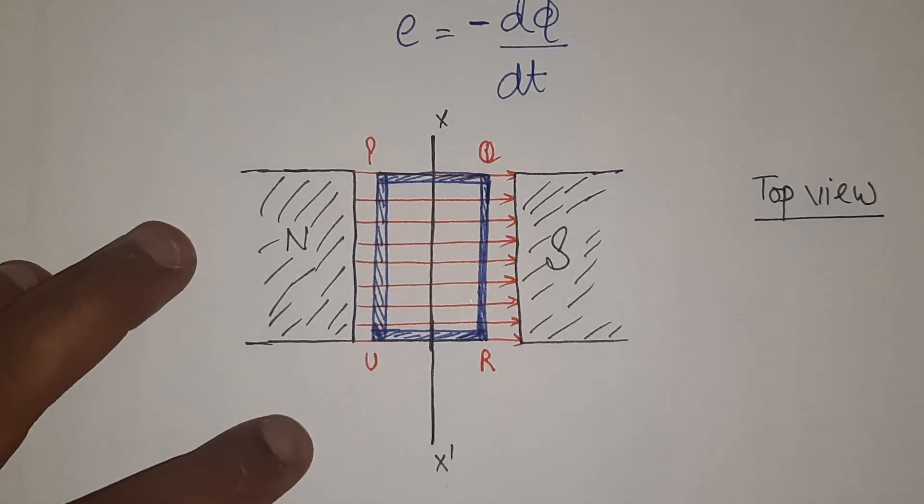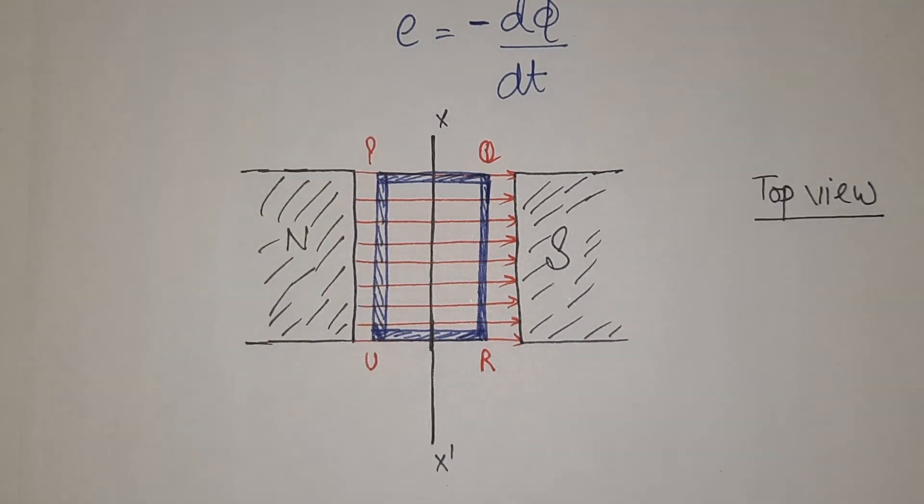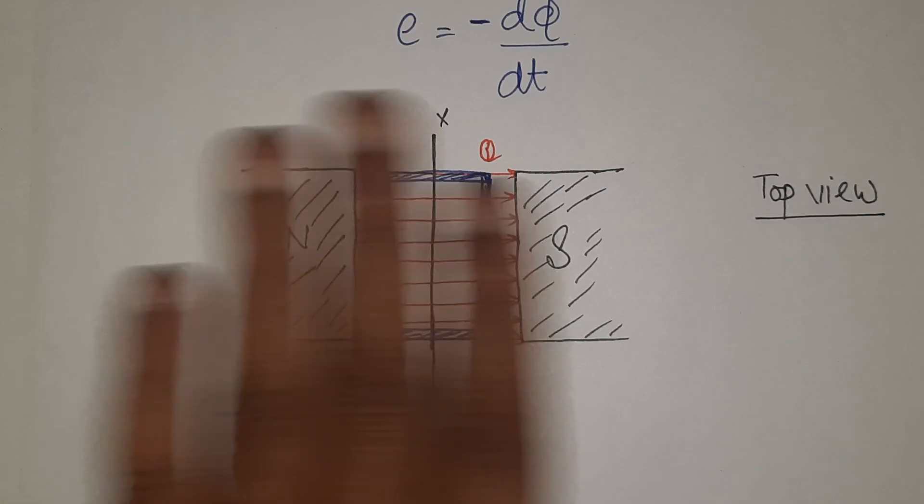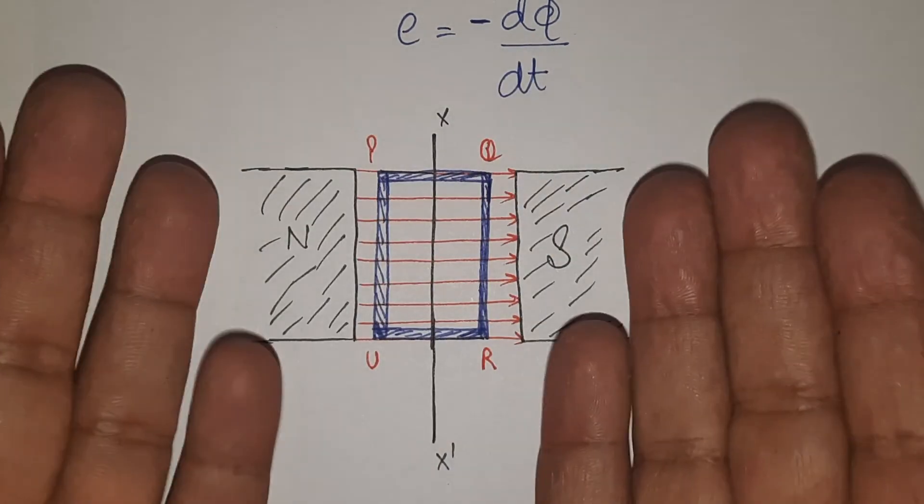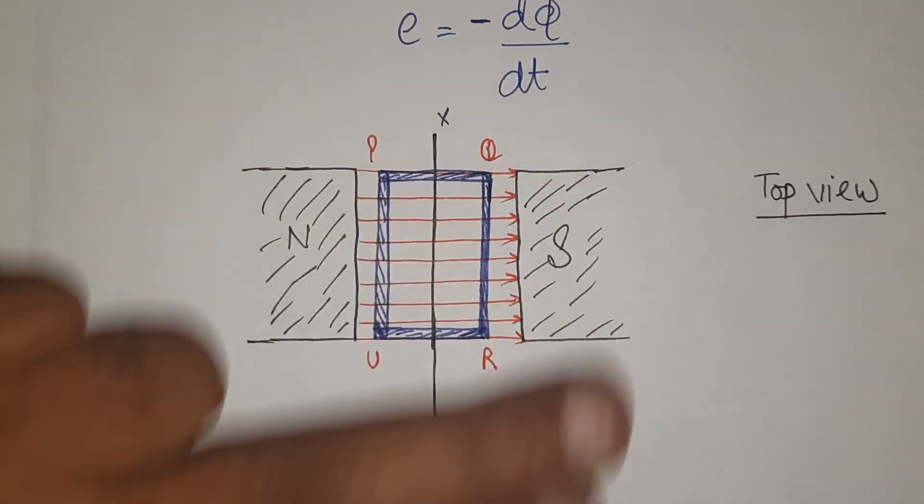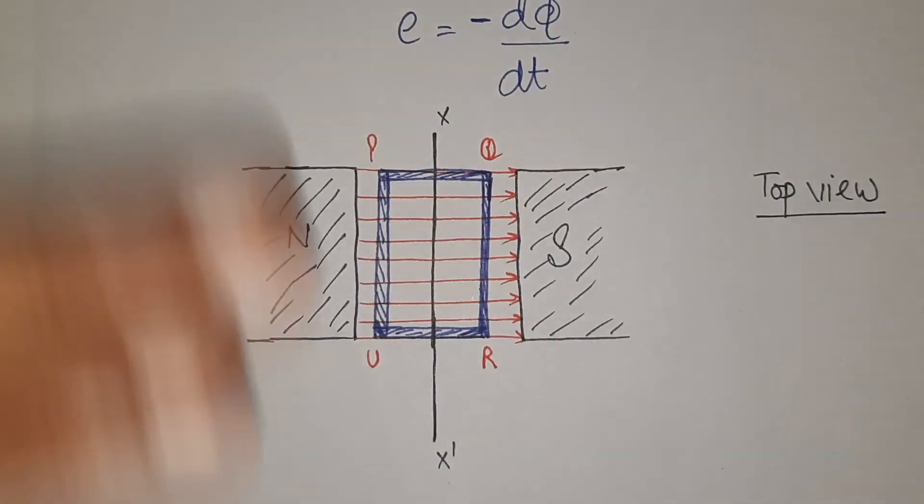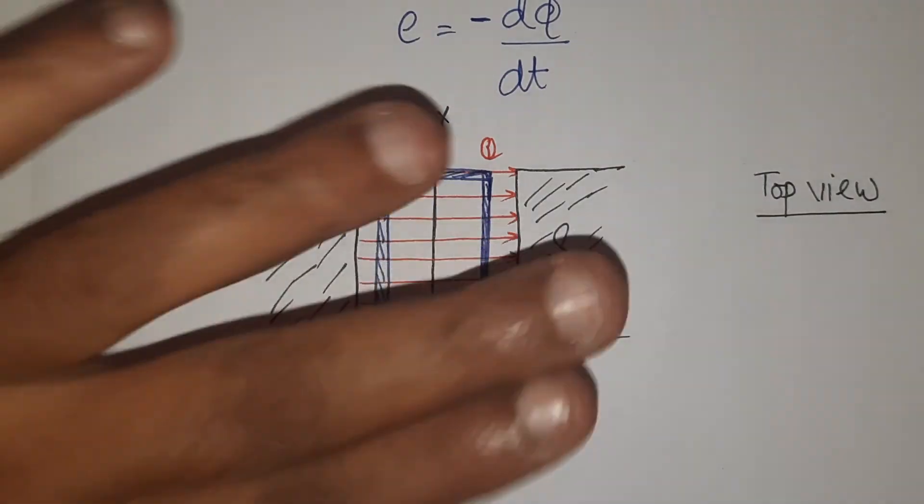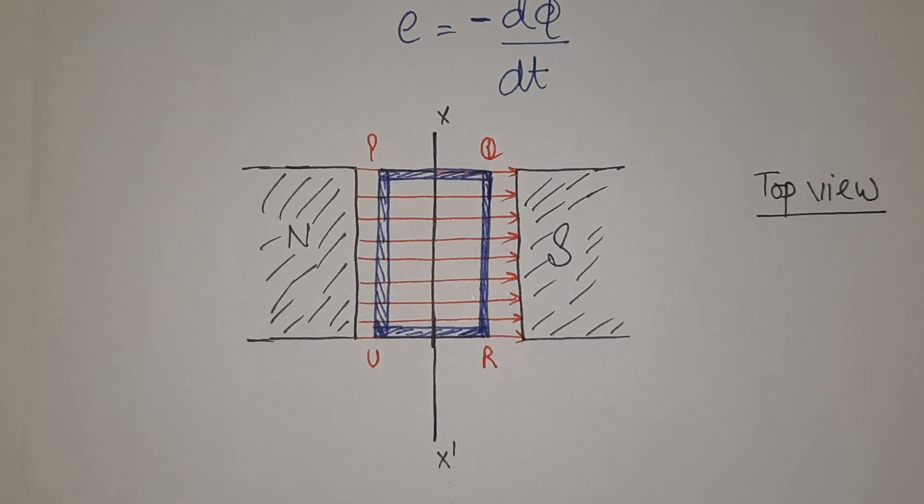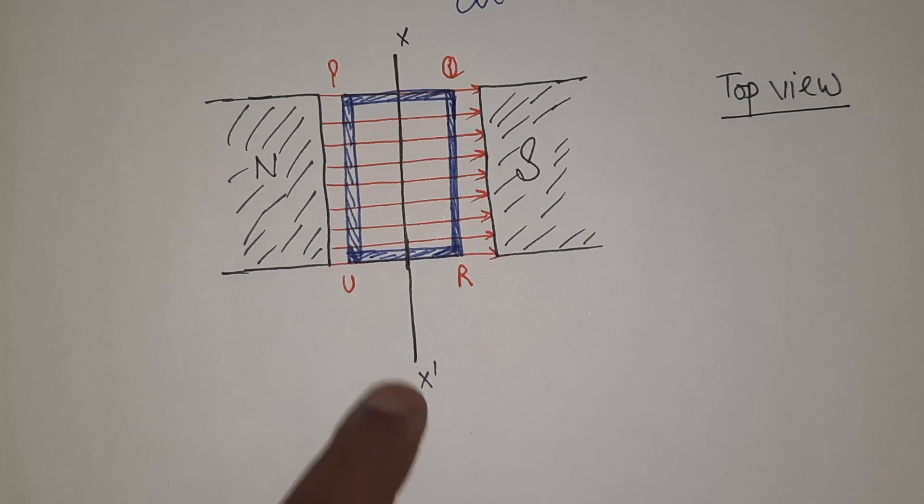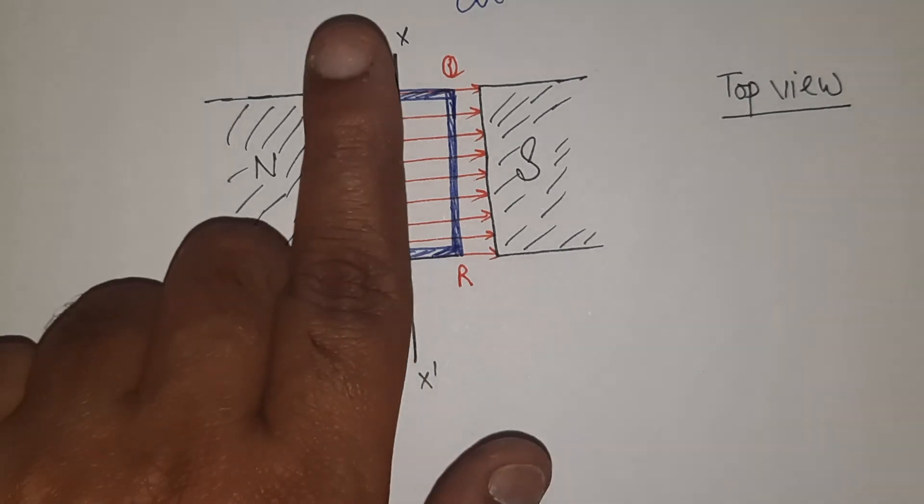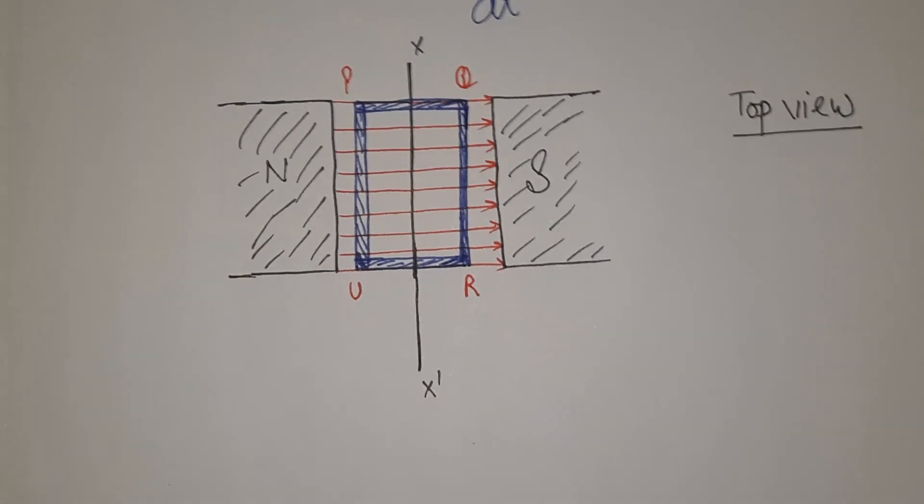So this is our top view. North here, south here, parallel to horizontal. North placed like this, south placed, and in between the coil is there. We are looking from the top. If we look at it from the front, from the front side, placing our eye line here, then looking at it from the front.